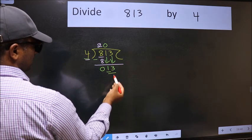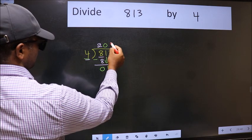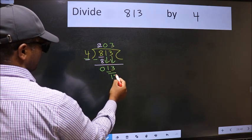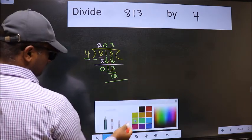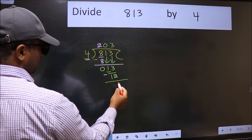Now 13. A number close to 13 in 4 table is 4 times 3 is 12. Now we should subtract. We get 1.